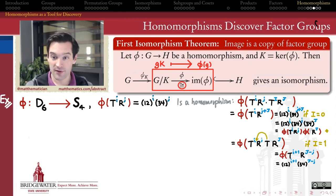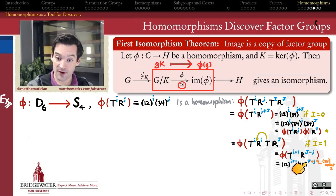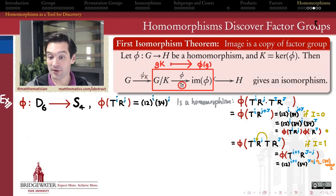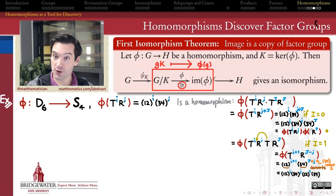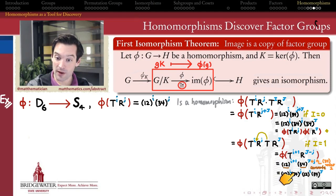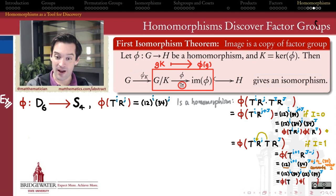To simplify we use properties of the symmetric group: since (3 4) is a transposition its order is 2, so it equals its own inverse, meaning minus j powers equals plus j powers. Also, since (1 2) and (3 4) are disjoint cycles they commute, so I can break (1 2)^(i+1) into (1 2)^i and (1 2)^1 and push (1 2)^1 past the j powers of (3 4). This rewrites the expression as (1 2)^i (3 4)^j · (1 2)^1 (3 4)^J, which is exactly phi(t^i r^j) composed with phi(t^I r^J). The homomorphism property is satisfied.